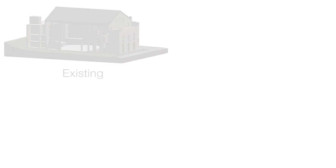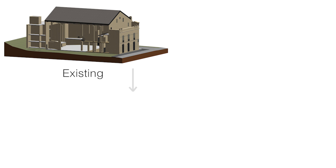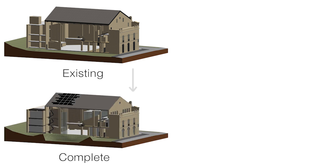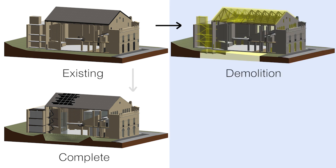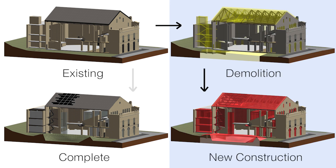You can use multiple phases when working with a building information model. You can create the as-built building in an existing phase, and then create one or more new phases, such as new construction. You can demolish certain parts of the existing building and add new additions in the new construction phase, as well as some temporary items.